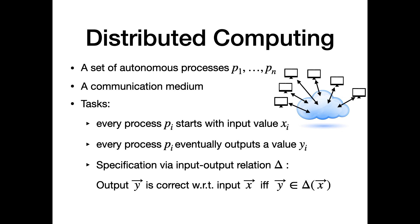In distributed computing, we have a set of autonomous processes P1 to Pn, and these processes are exchanging information via some communication medium. They are aiming at solving tasks. In a task, every process Pi starts with some input value Xi, and it must eventually output some value Yi.